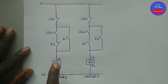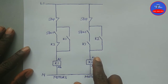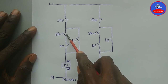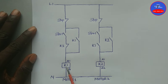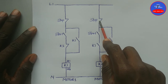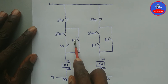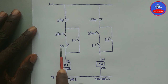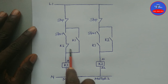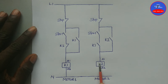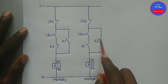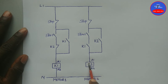Stop and start buttons for Contactor 1 or Motor 1, stop and start buttons for Contactor 2 or Motor 2, open contact on Contactor 1, close contact on Contactor 2, open contact on Contactor 1, and open contact on Contactor 2.